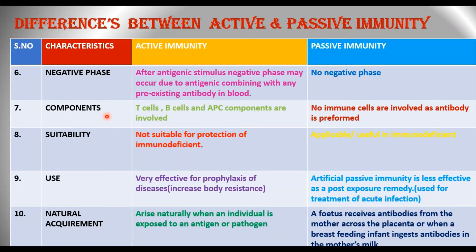Regarding components: in active immunity, T cells, B cells, and antigen-presenting cells are involved. Whereas in passive immunity, no immune cells are involved, as the antibodies are preformed.